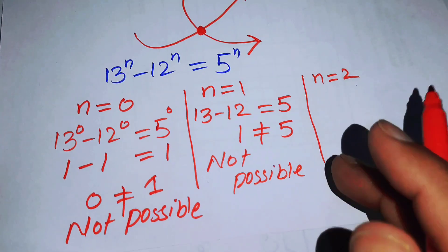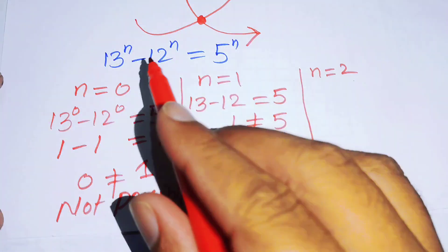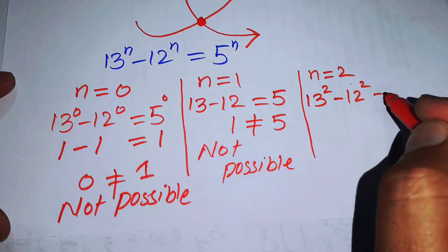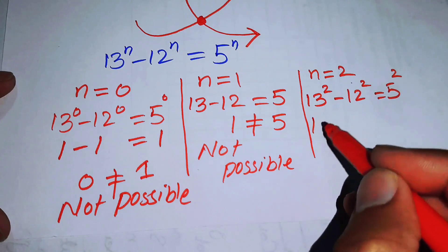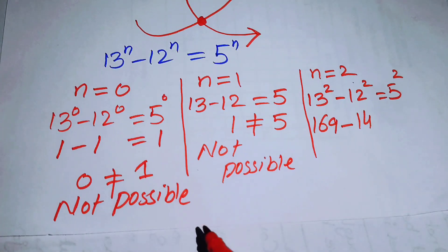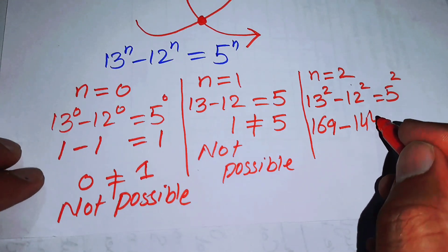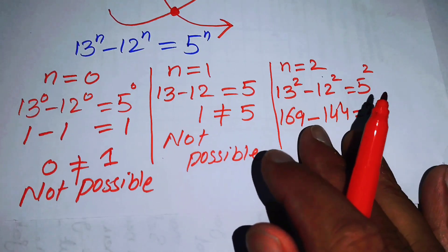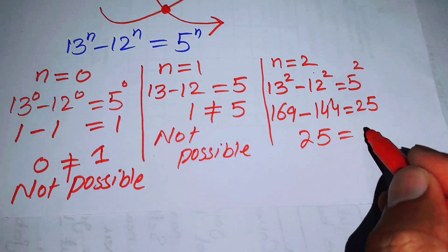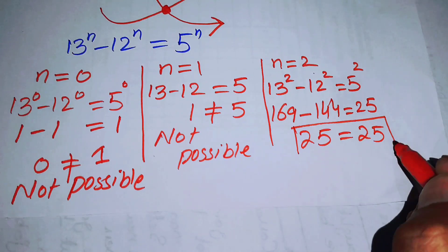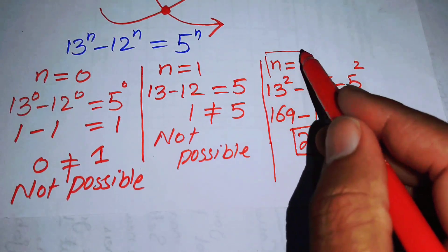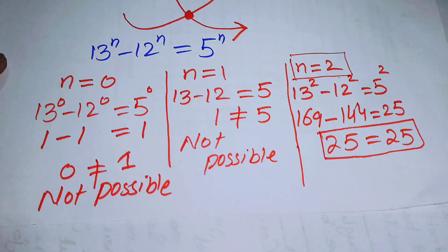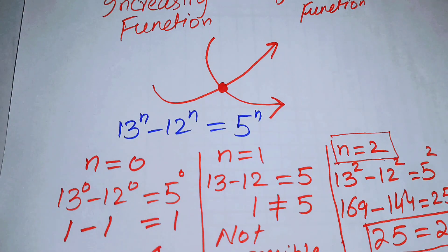Now we check n = 2: 13² - 12² = 5². We get 169 - 144 = 25, and indeed 25 = 25. So n = 2 satisfies the given equation, and since the solution is unique, n = 2 is the only solution.